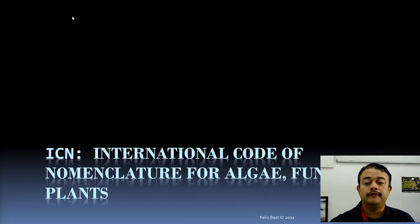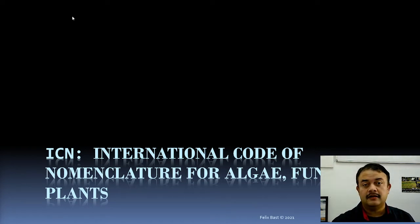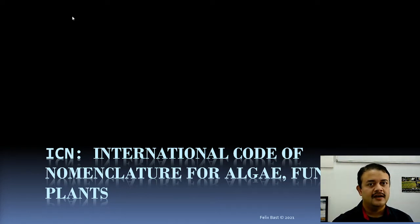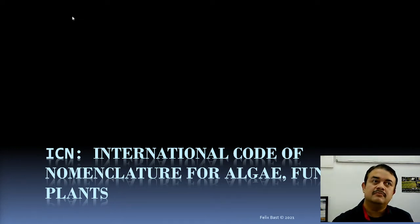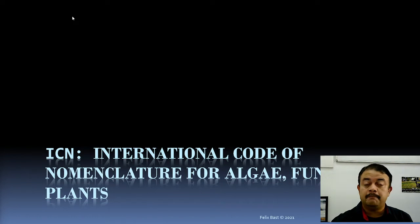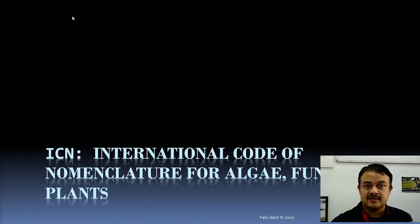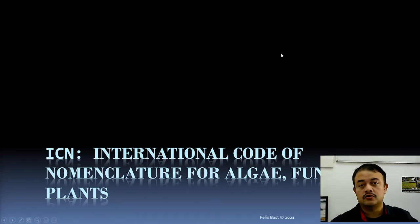ICN — that is, International Code of Nomenclature for algae, fungi, and plants. So what is this code of nomenclature? We have several kinds of nomenclature codes, which are sets of rules and regulations that formalize how to name a species, how to classify, how to reclassify — all those things. In our everyday life we have analogues: for example, the Constitution of India, which shows the duties and responsibilities of a citizen, and the Indian Penal Code, which defines crimes and their extent.